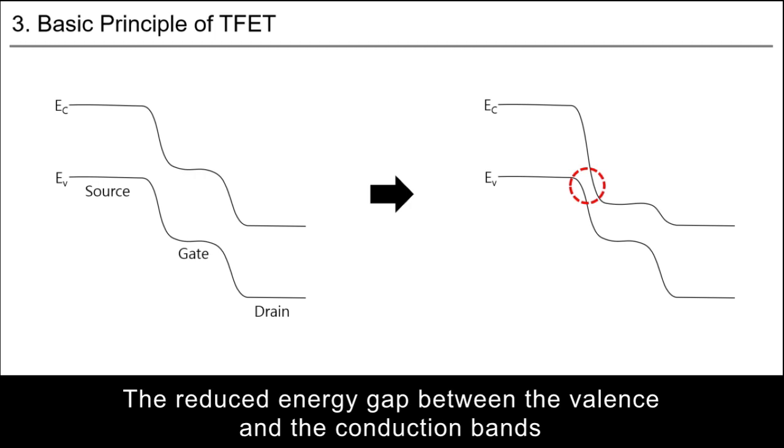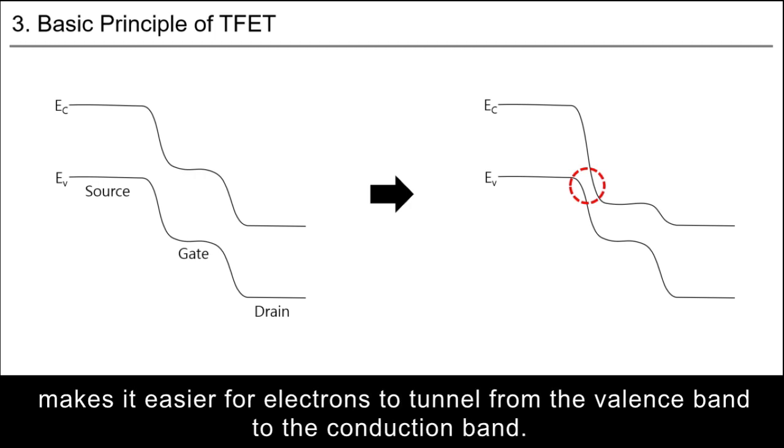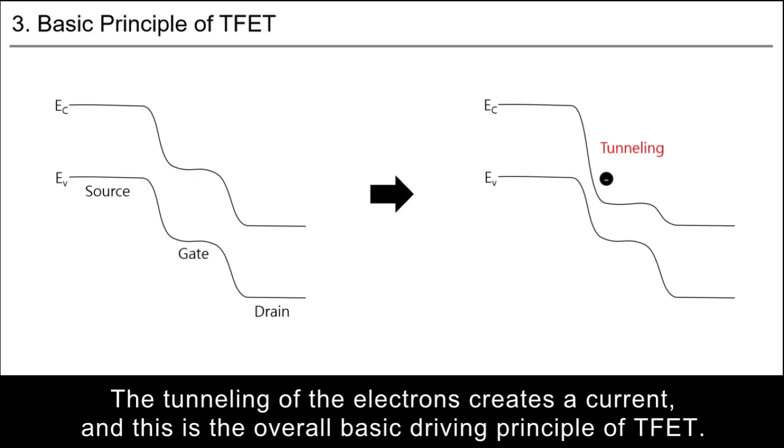The reduced energy band gap between the valence and conduction bands makes it easier for electrons to tunnel from the valence band to the conduction band. The tunneling of electrons creates a current, and this is the overall basic driving principle of TFET.